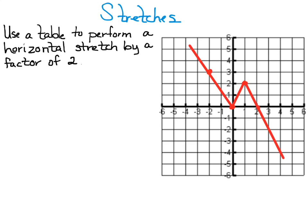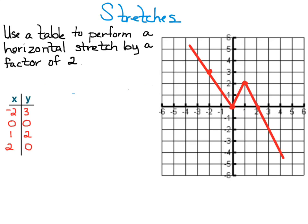I'm going to start with this graph and I want to perform a horizontal stretch by a factor of two. What we first want to do is choose several readable points off of the graph and create a table. I just read some of those readable points across to the crosshairs and I was able to create at least four points that were readable.